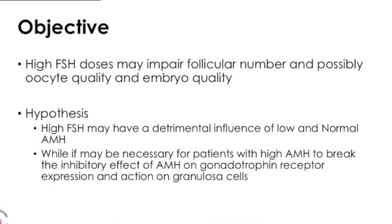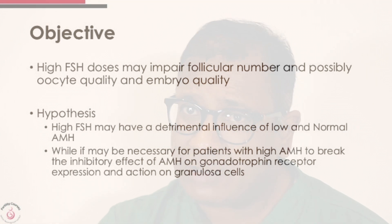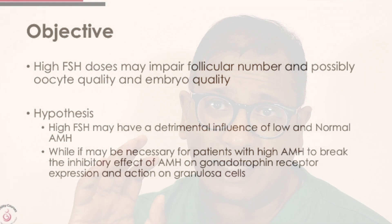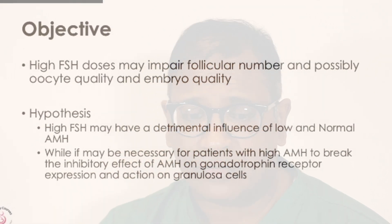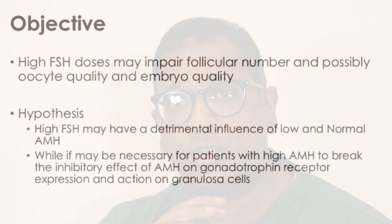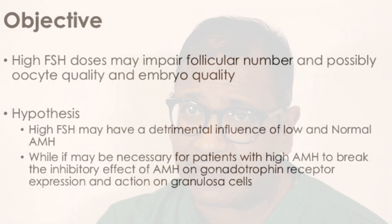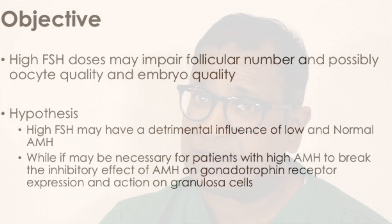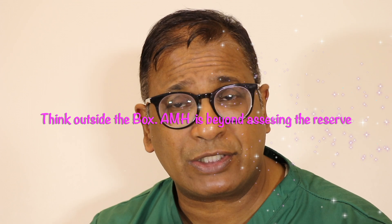Let's look at what they did. The objective was based on the belief that high FSH dosing impairs follicular numbers and possibly oocyte quality and embryo quality. The hypothesis is that high FSH may be detrimental in low and normal AMH. While it may be necessary to increase the dose of FSH in women with high AMH to overcome the inhibitory effect that AMH has on gonadotropin receptors. Simply put: the higher the AMH, the bigger the resistance. I emphasise AMH not just for ovarian reserve, but for how it helps us plan the dose of stimulation and which protocols may not work.